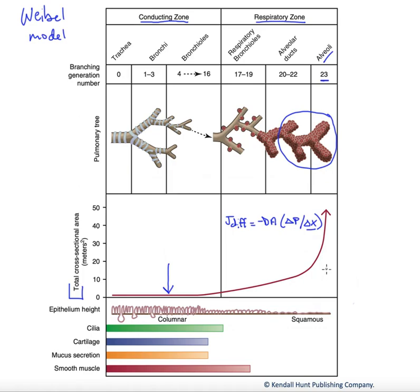However, when we go over to the alveoli, we start to find that our cross-sectional area, the volume, increases dramatically.